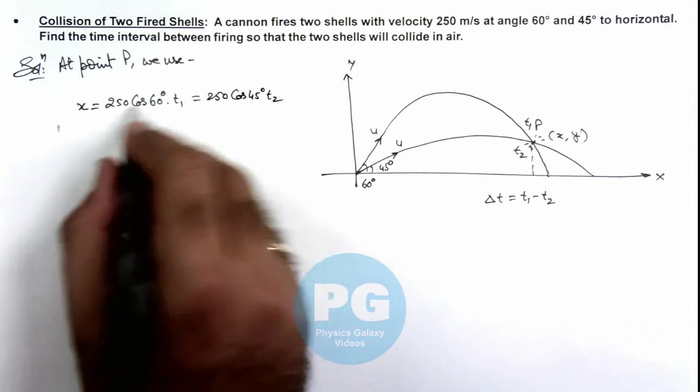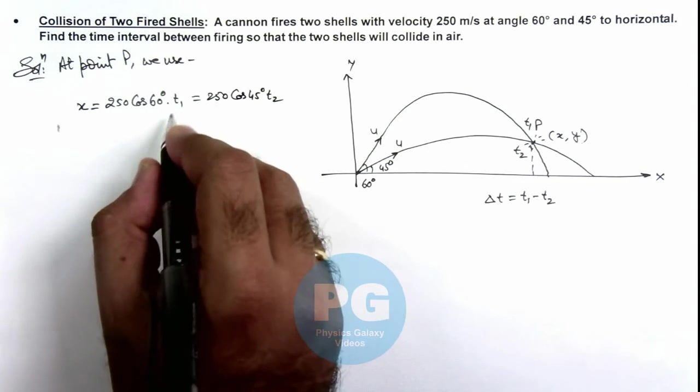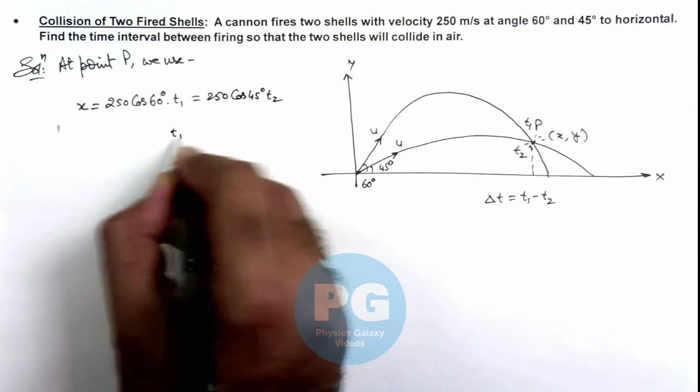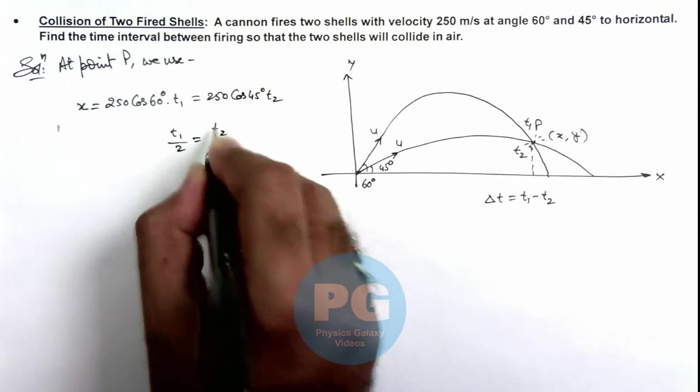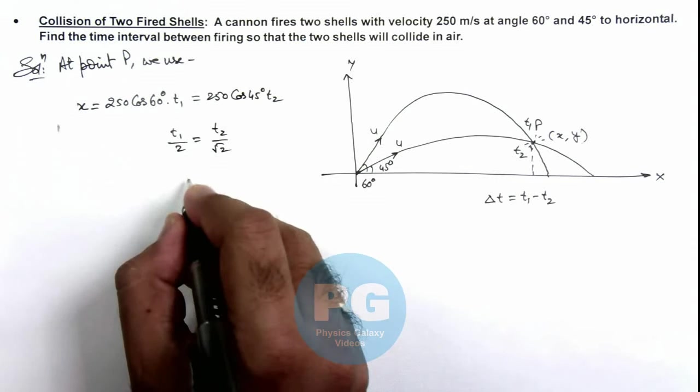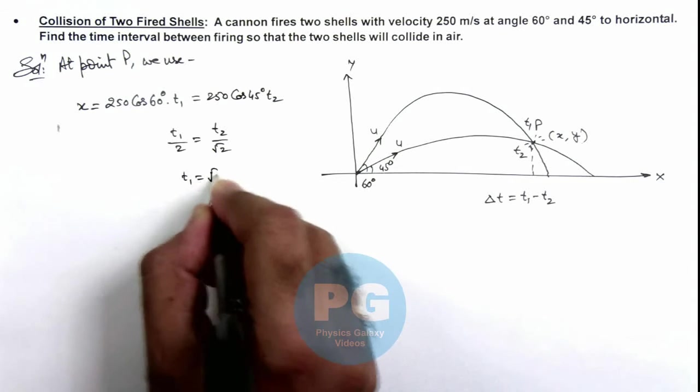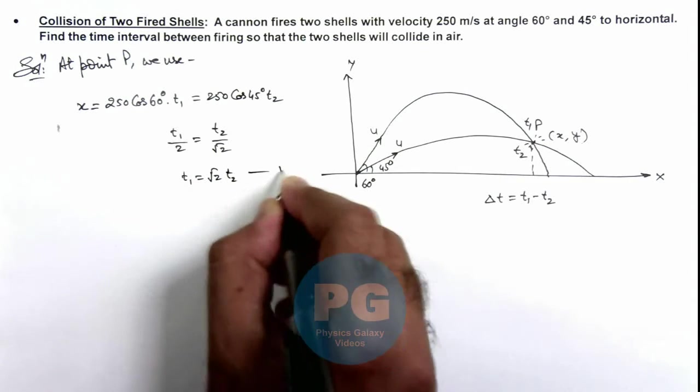So in this situation if we simplify, this will give us t₁/2 = t₂/√2, or here we can write t₁ = √2 t₂. Say this is our equation 1.